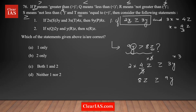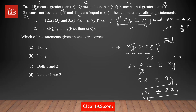Flipping this around gives 9y ≤ 8z. So from the given statements, we can only conclude that 9y is less than or equal to 8z. But Statement 1 claims 9y > 8z, which is not correct. Therefore, Statement 1 is false.